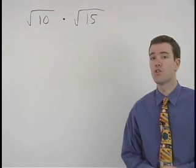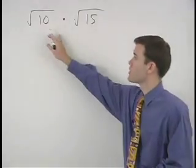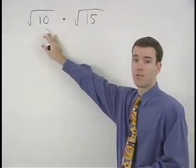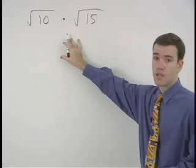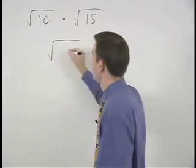To multiply two square roots together, simply multiply the numbers inside the square roots together. So root 10 times root 15 is root 150.